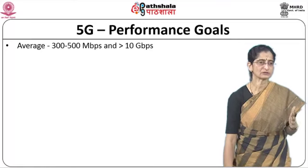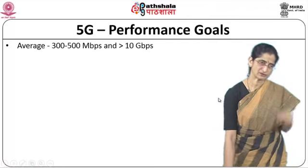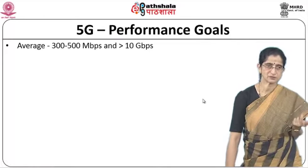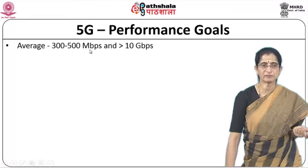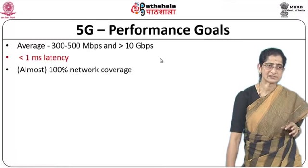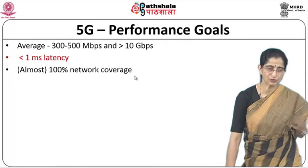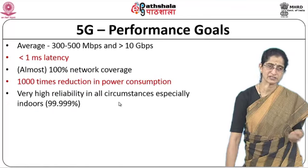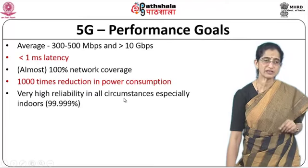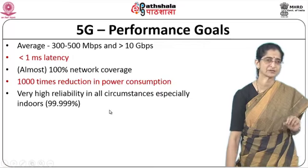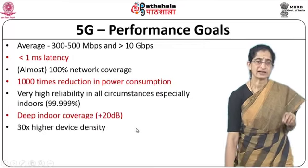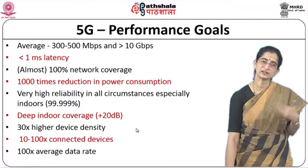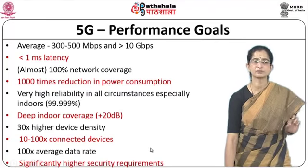Coming to 5G: there are certain performance goals that have been set. We expect an average of 300–500 Mbps and greater than 10 Gbps data rates, with less than 1 millisecond latency. Almost 100% network coverage is expected — you should not have places without network coverage, whether inside a building or anywhere. There should be a 1000 times reduction in power consumption, giving very long battery usage. Very high reliability — 99.999% — is expected especially indoors, along with deep indoor coverage and 30 times higher device density.